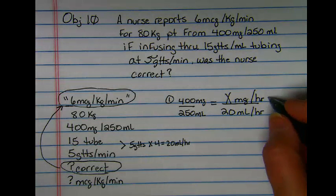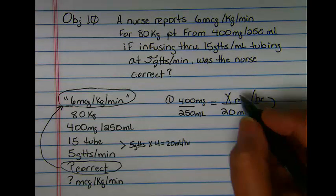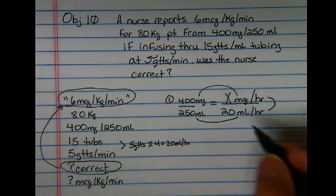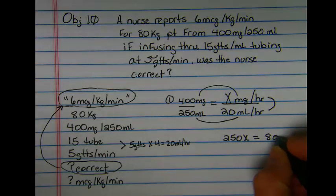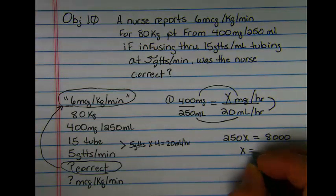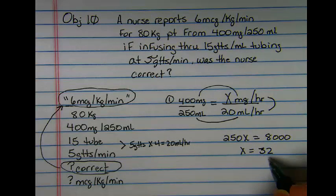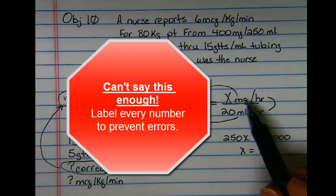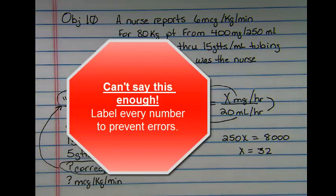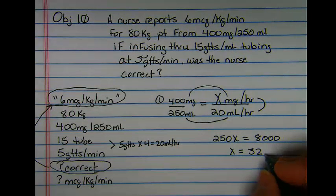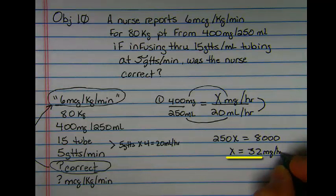Again, in ratio and proportion, as long as your labels match, this will work. I have 250x, so x equals 32. Before I go any further, I'm going to bring this label down to make sure that I know exactly where I am and so that I don't make any mistakes in my labeling. So 32 was x and that means x was milligrams per hour.